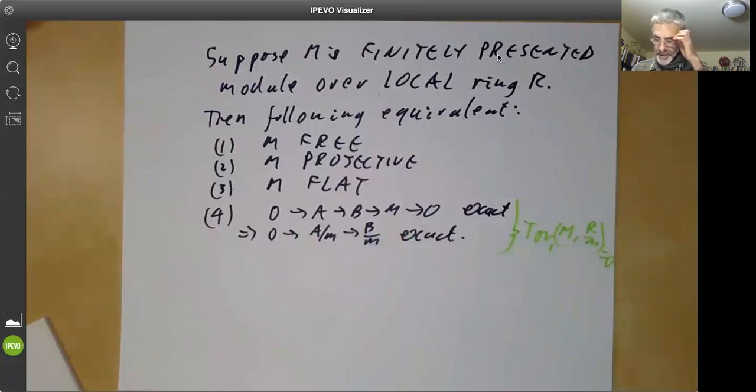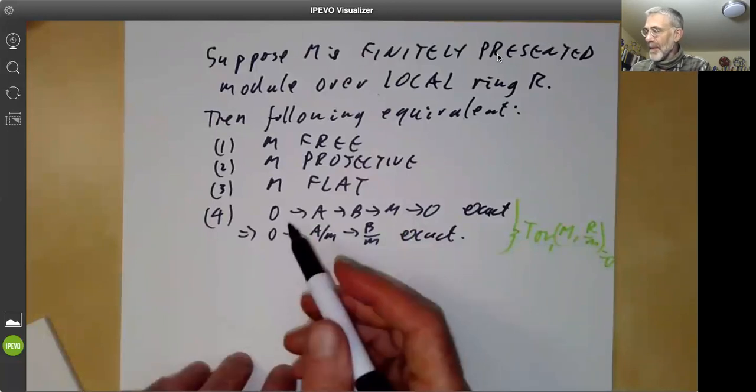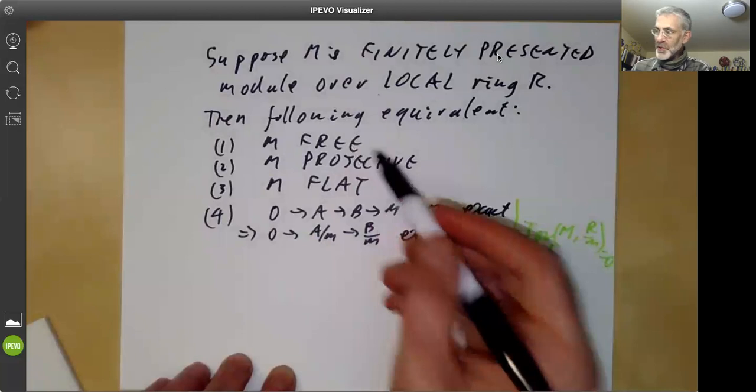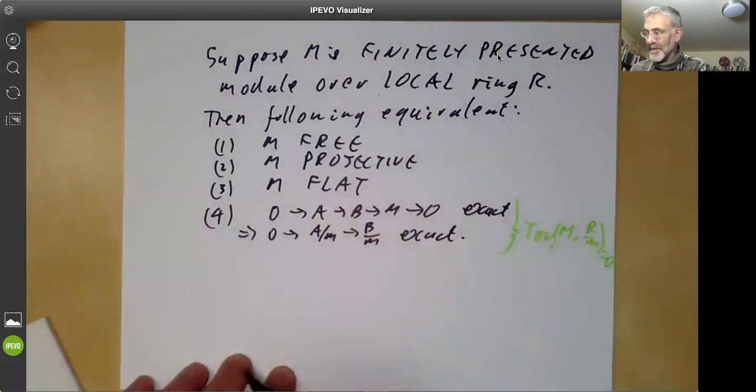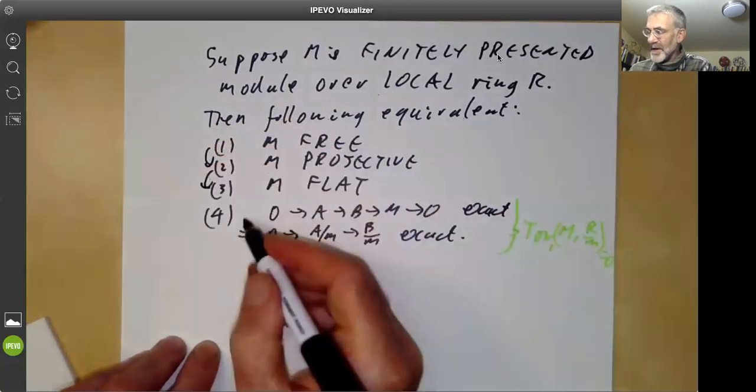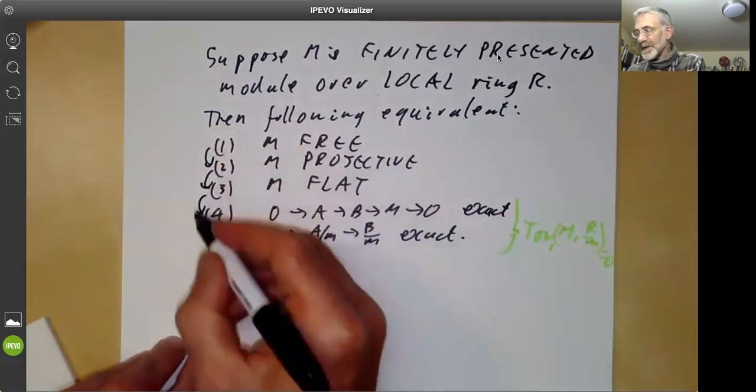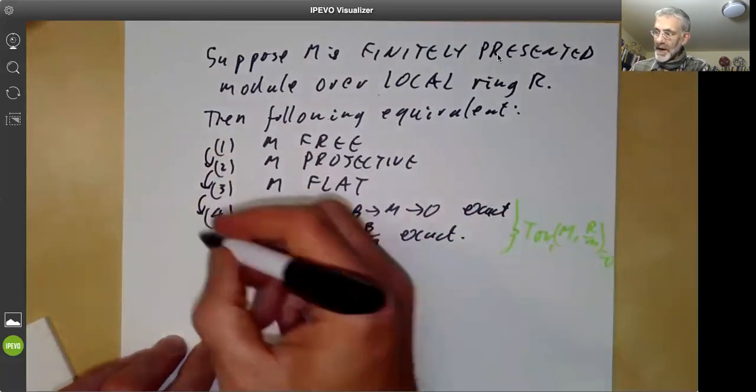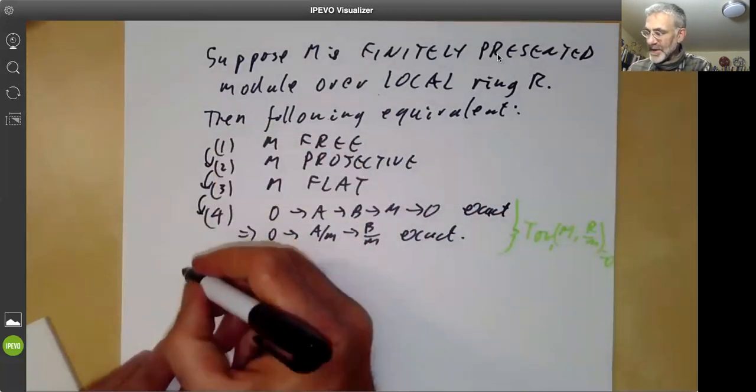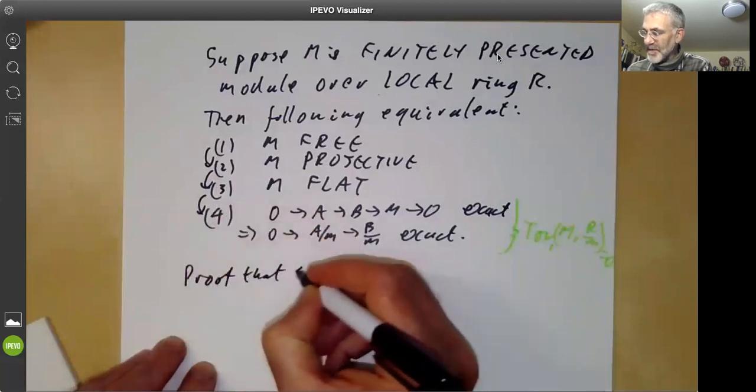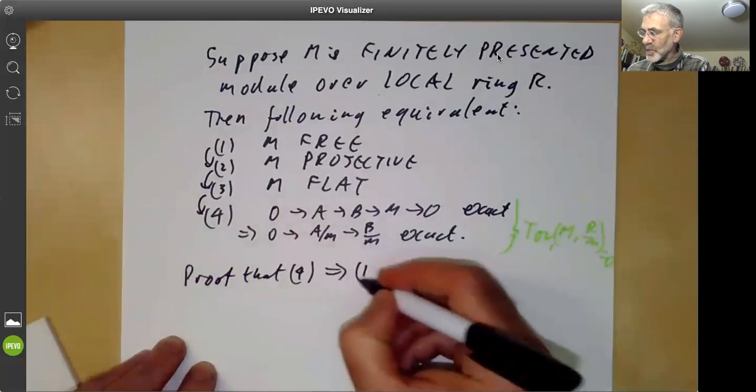We can also add conditions about being locally free or stalkwise locally free, but you've probably had enough of these. Now, these implications are very easy. This implication will be very easy when we've done homological algebra, so we'll postpone it for a bit. So the main problem is to show that condition four implies condition one.